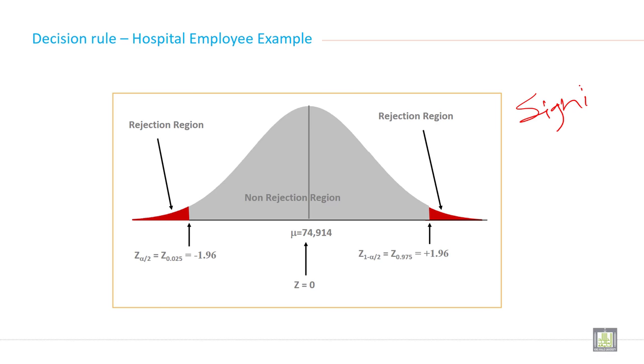If significance level is not given, it means you can take 95% confidence level. So your significance level will be 5%, 0.05. And when you divide 0.05, it will come 0.025 on this side and also 0.025 on that side.